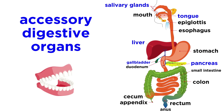We also examined the accessory digestive organs — the ones which are not part of the GI tract, but nevertheless play an important role in digestion. Those would include the salivary glands, tongue, liver, gallbladder, and pancreas.